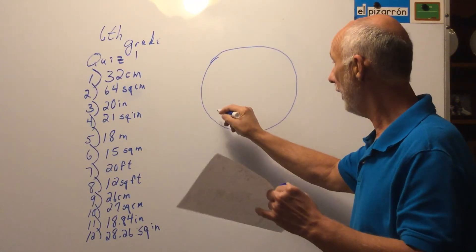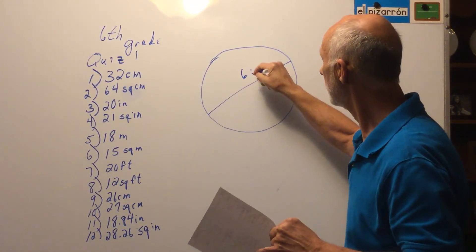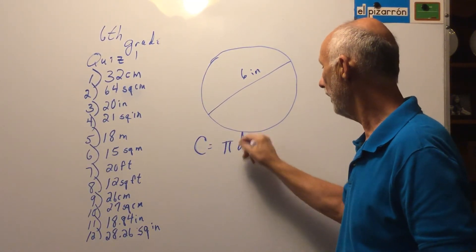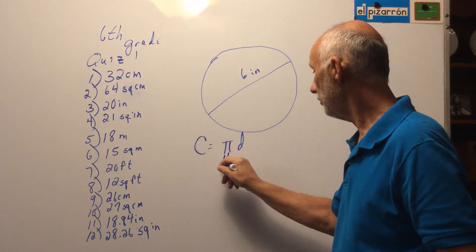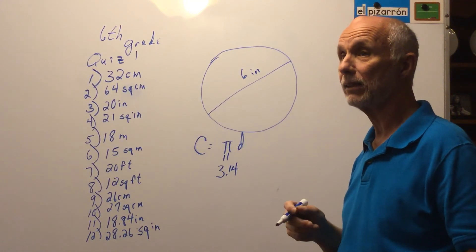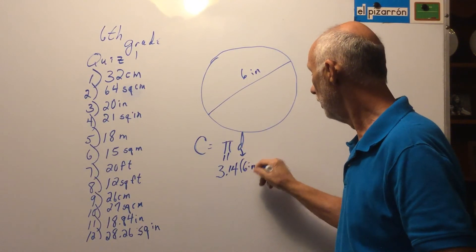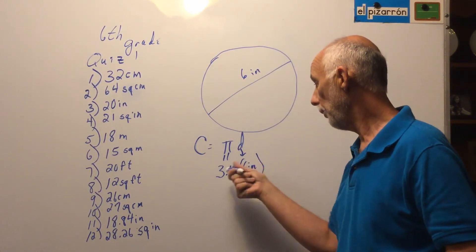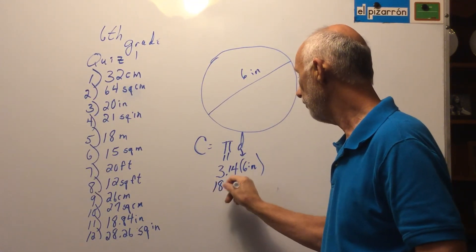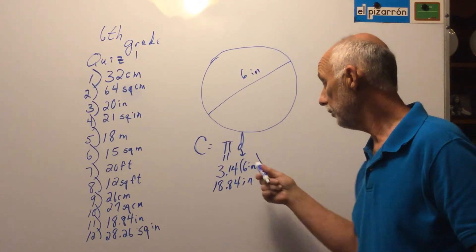The circle had a diameter of six inches. Circumference equals pi times diameter. Pi equals approximately 3.14 — not the exact value, but the approximation we use. The diameter is all the way across: six inches. Multiply 3.14 times six inches to get 18 and 84 hundredths inches.